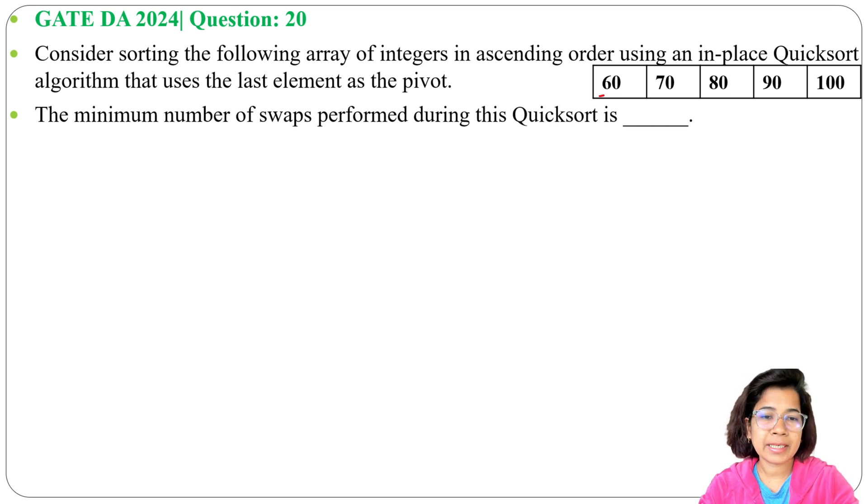Here it contains 60, 70, 80, 90, 100. This is already in sorted order. Now I'll consider 100 as pivot. It is already in place, so no need to swap. There will be two partitions: 60, 70, 80, 90 will be in one partition, and 100 will be another partition.